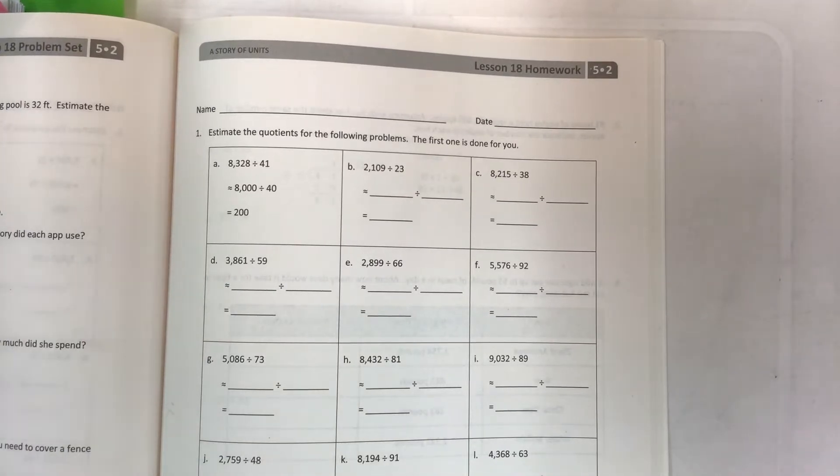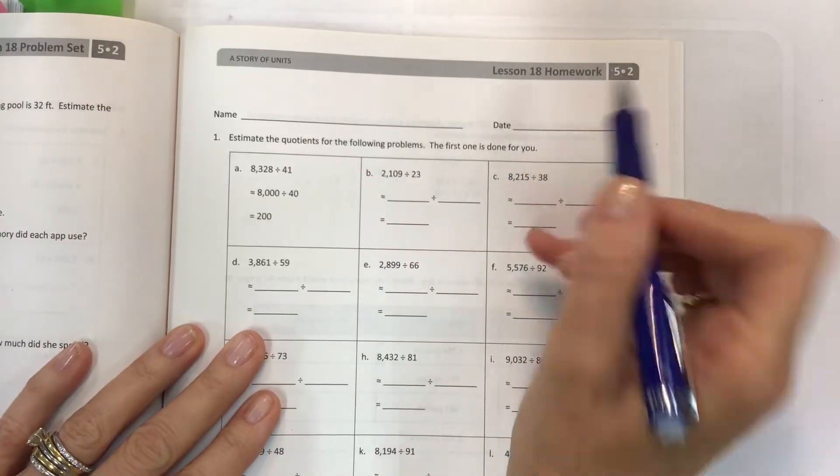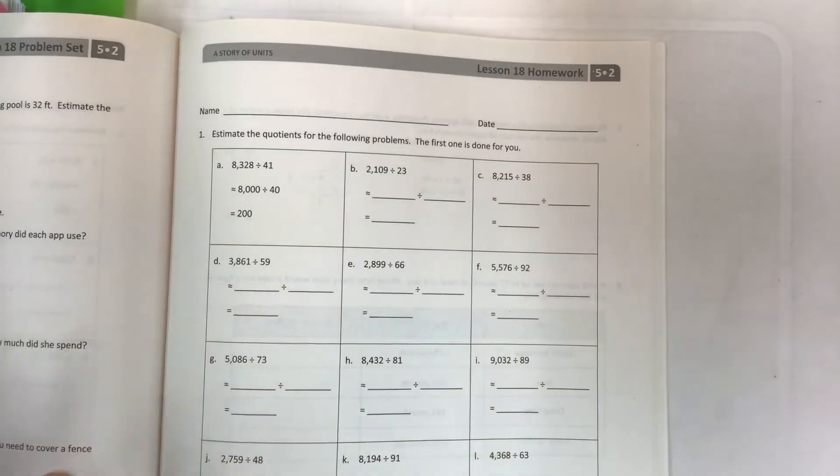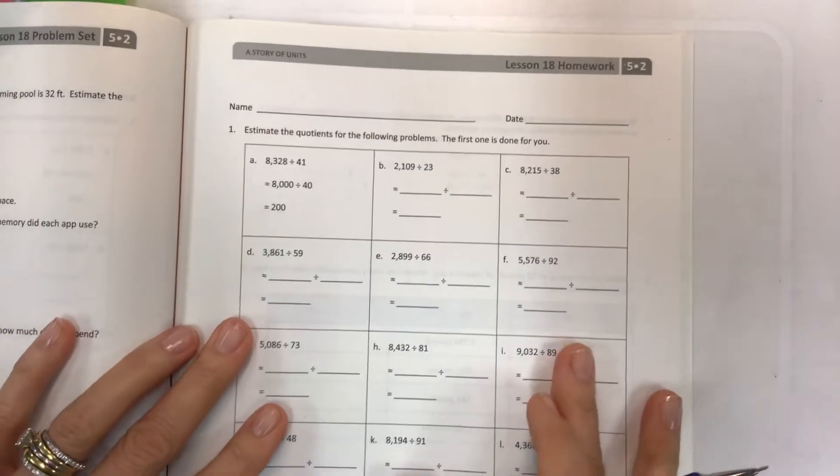Hey there kids, welcome to another math video. This is for Eureka Math Grade 5 Module 2 Lesson 18 homework. Just like the previous lesson, we're gonna pick it up right where we left off and the objective is to use basic facts to approximate quotients with two-digit divisors.